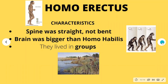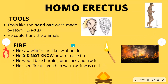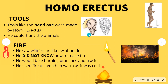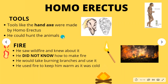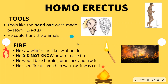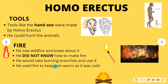Homo Erectus also made tools, but better ones than Homo Habilis — like the hand axe. Because of these improved tools, he could hunt animals, which Homo Habilis could not do. Homo Habilis only gathered food, but Homo Erectus could hunt. This is the most interesting part: fire started becoming important to man. He saw wildfire — forests burning due to natural causes — and understood it gave out heat.